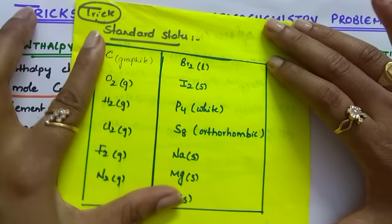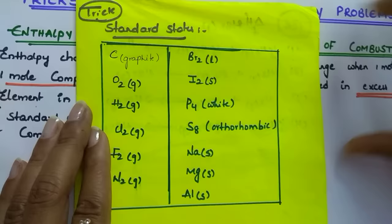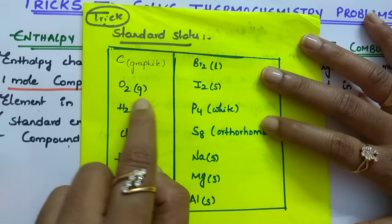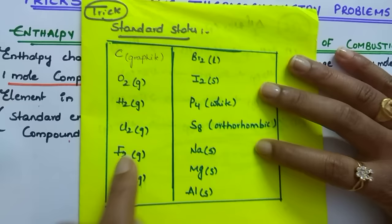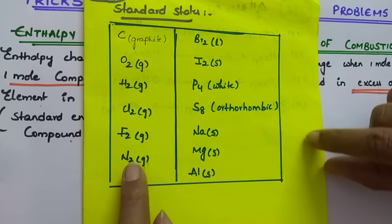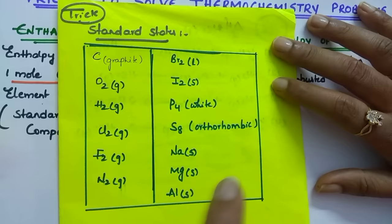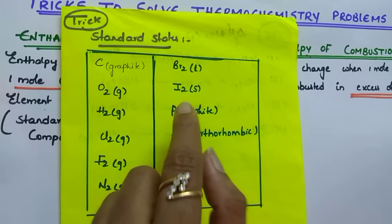Note this list and keep it with you while solving thermochemistry problems. Carbon exists in graphite state. Oxygen is present as O₂ in gaseous state — not O₃. Hydrogen is present as H₂ in gaseous state. Chlorine as Cl₂ in gaseous state. Fluorine as F₂ in gaseous state. Nitrogen as N₂ in gaseous state. Bromine as Br₂ in liquid state. Iodine as I₂ in solid state.